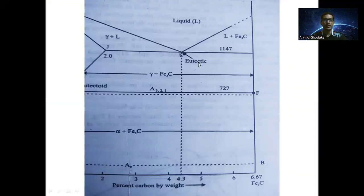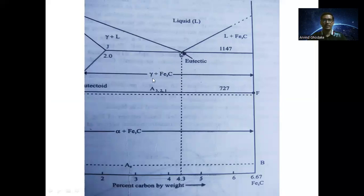The third reaction is the eutectic reaction, where liquid gets separated into two solids: austenite and cementite. At 1147 degrees Celsius and 4.3 percent carbon, liquid converts into S1 plus S2 — where S1 is austenite and S2 is cementite. The mixture of austenite and cementite is called ledeburite.